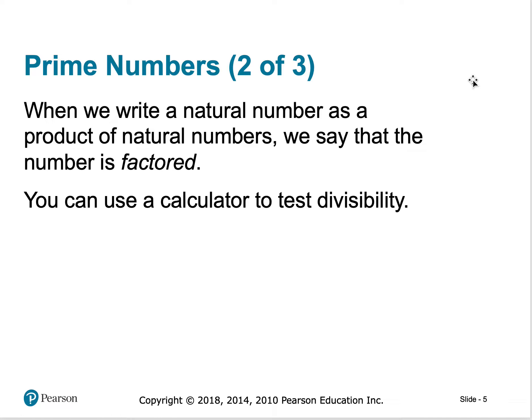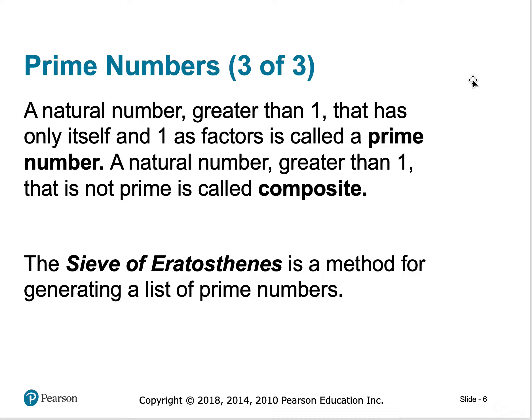When we write natural numbers as the product of two natural numbers, we say that it's factored. Two times three is six, so two and three would be my factors. If they're factors, then the end number six is divisible by two and three. Any natural number greater than one that has only itself and one as a factor is considered prime. Everybody else is composite.